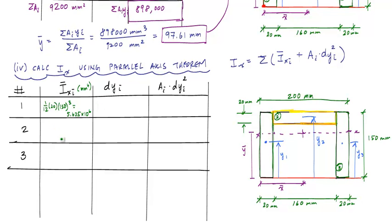For area 3, because it's the same as area 1, this was also going to be 5.625 times 10 to the sixth millimeters to the fourth. For this area 2, this yellow-orange-ish thing here, this is going to be 1/12th base, which is 160 times the height, which is 20 millimeters cubed. And we will get 0.1067 times 10 to the sixth millimeters to the fourth.